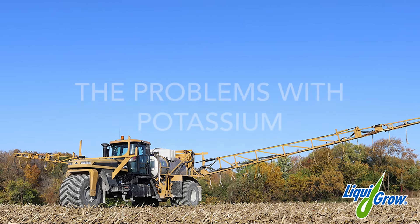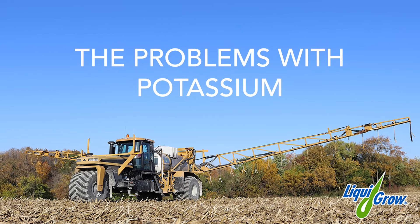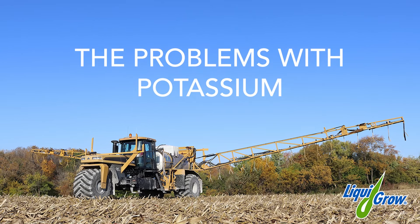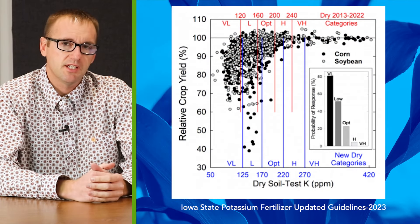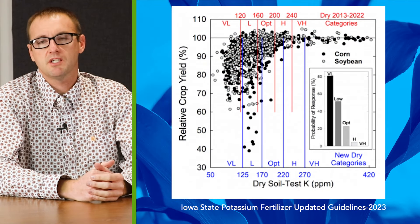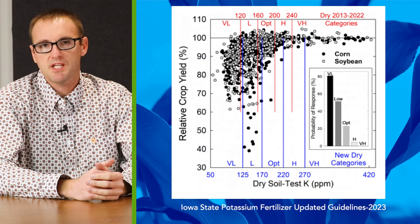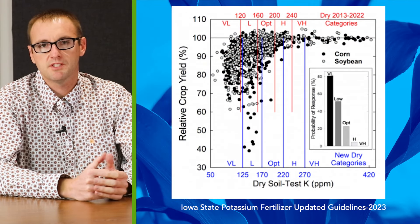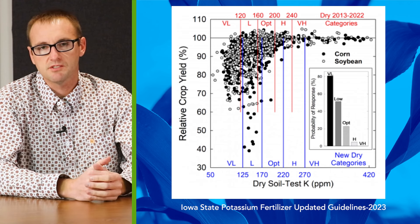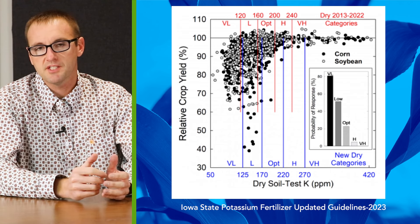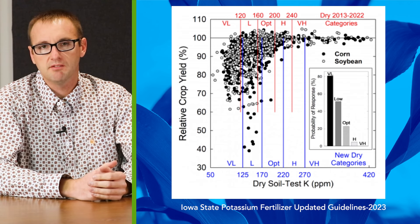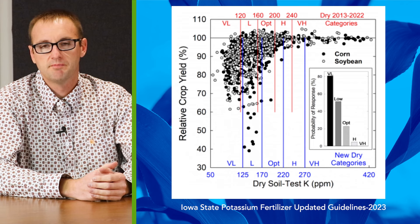And sometimes that depends. But with potassium, there are some specific considerations to take into account. On the screen here, you should be seeing what we call a potassium response curve. This curve looks at soil test potassium level versus yield.